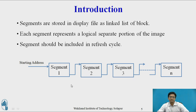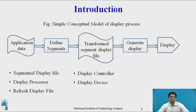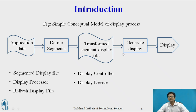We have a starting address, then Segment 1 linked to Segment 2, Segment 3, and so on till Segment N. The figure shows a simple conceptual model of the display process, where Application Data contains the Segmented Display File. Segments are defined by the display processor, then transformed onto a display file for the refresh display cycle, sent to a display controller to generate the display, and finally mapped to the display device.